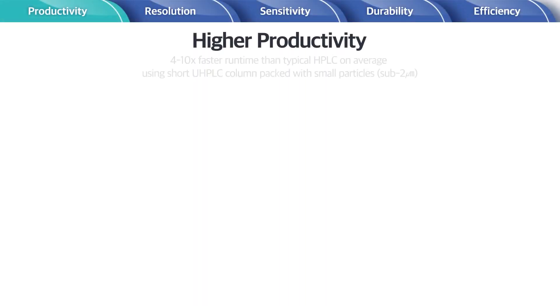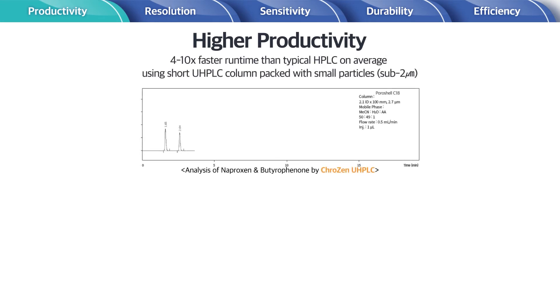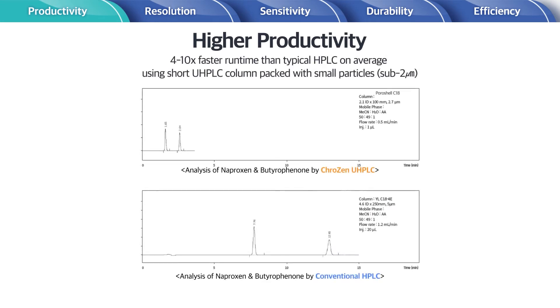Higher productivity. You can analyze samples 4 to 10 times faster than typical HPLC on average, using a short UHPLC column packed with small particles under 2 micrometers.